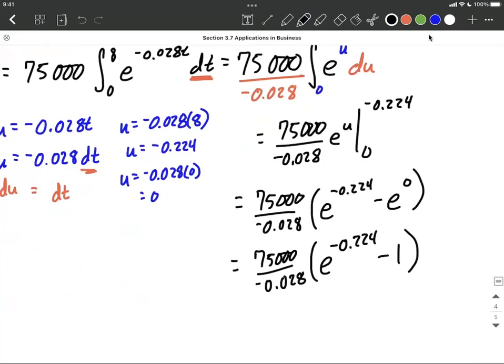Getting this all into our calculator, I got our present value to equal 537,548.75, rounding to two decimal places, and that'll be in dollars.